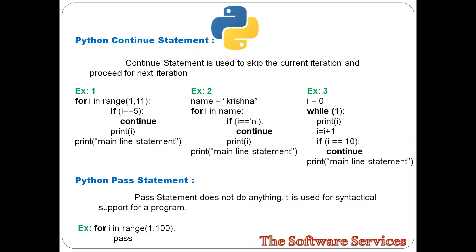Suppose the 6th iteration of the loop is where we place the continue statement. That means iterations 1 through 5 and 7 through 10 will be executed, but the 6th time the loop body will be skipped.